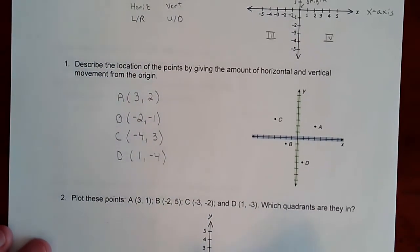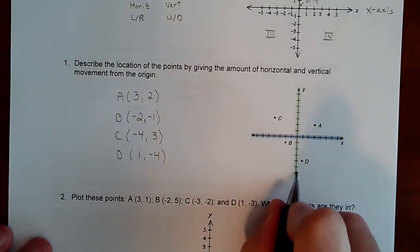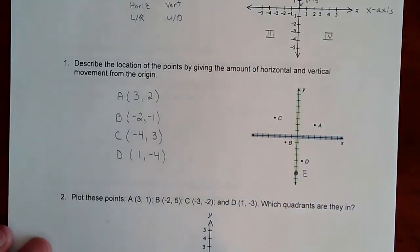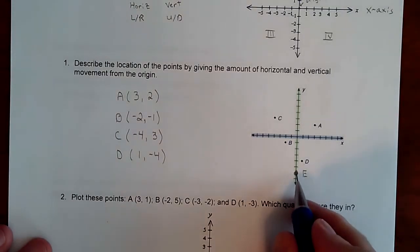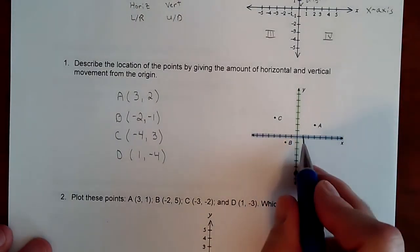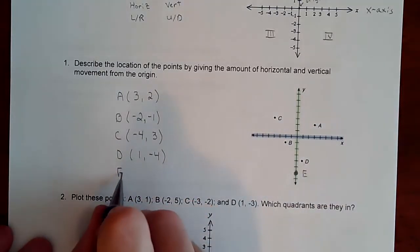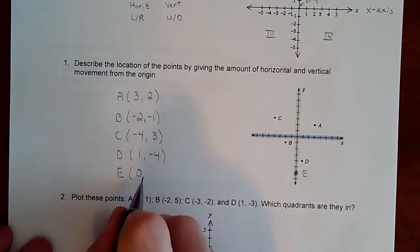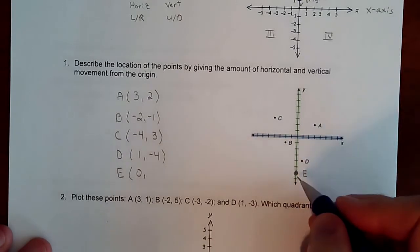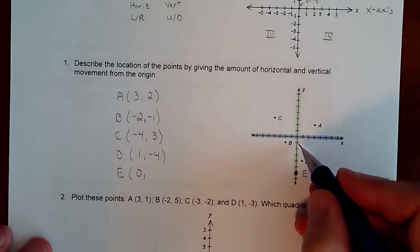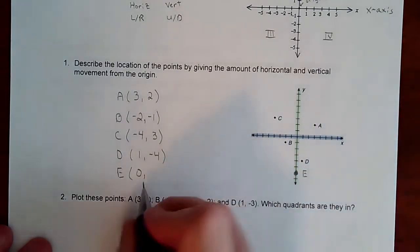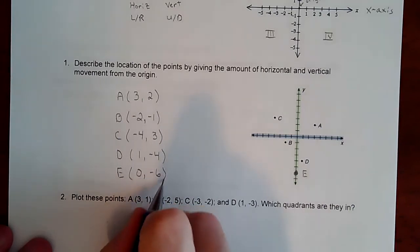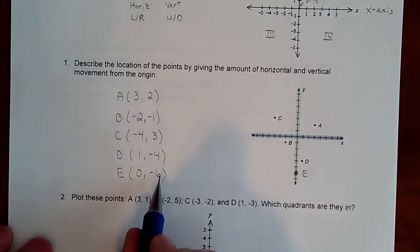We're going to add one more point and call it point E. This one lands on the axis, specifically the y-axis. So there is no left and right movement. My x value, my left and right movement, is zero. And then we're just down six. So we're down six, giving us (0, -6).